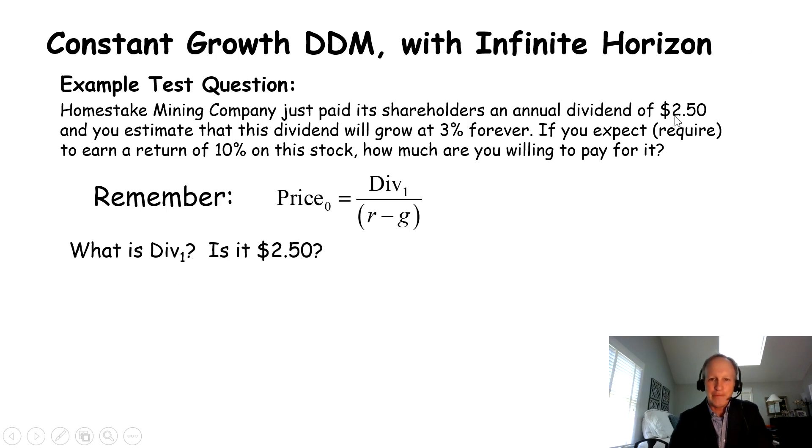That's what it says up here, but it's not $2.50. That's what they just paid their shareholders. I have so many students that will put $2.50 in that numerator. Let's not do that anymore. $2.50 is last year's dividend. I need next year's dividend. Next year's dividend is going to be what we just paid times 1.03, times 1 plus that growth rate 1.03. It's $2.575.